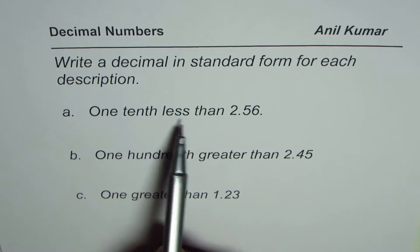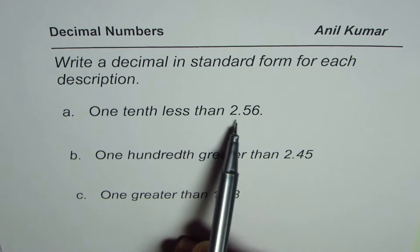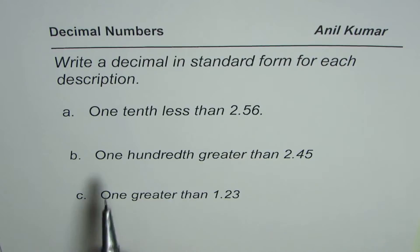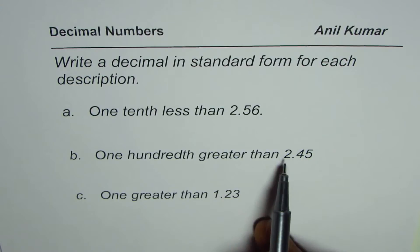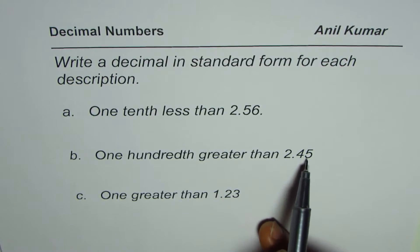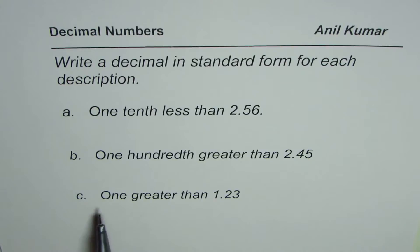One tenth less than 2.56. The other number is one hundredth greater than 2.45, you could read this as 2 and 45 hundredths. And the third one is 1 greater than 1.23.